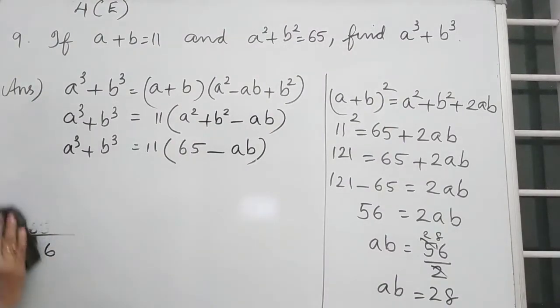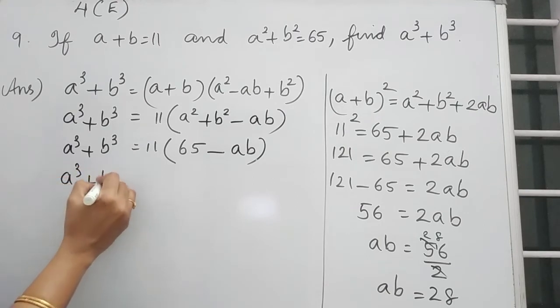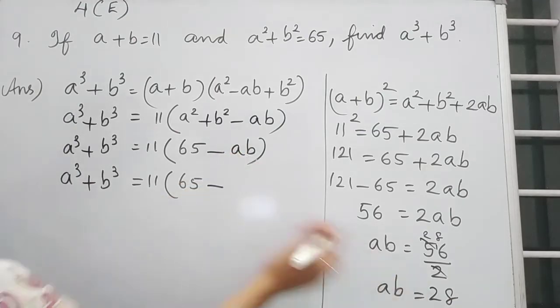That 28 we can substitute here. So A cube plus B cube is equal to, you want to find that now? So 11 into 65 minus, this AB we can substitute as 28.